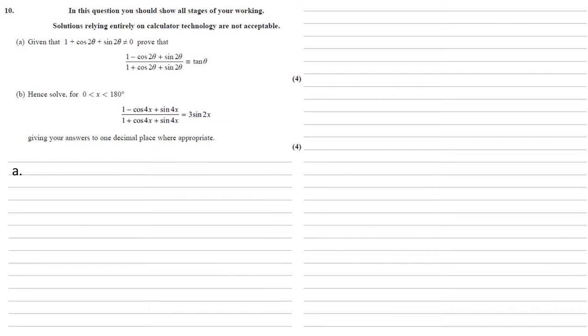Given that 1 plus cos 2 theta plus sine 2 theta is not equal to 0, we need to prove that 1 minus cos 2 theta plus sine 2 theta all over 1 plus cos 2 theta plus sine 2 theta is identical to tan theta.